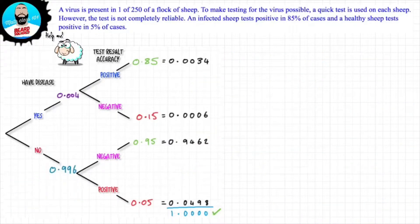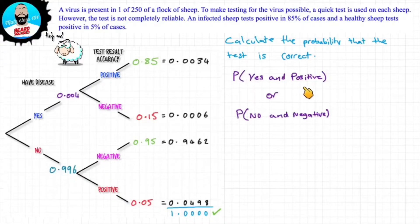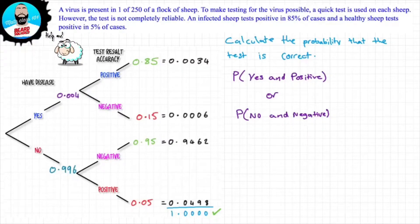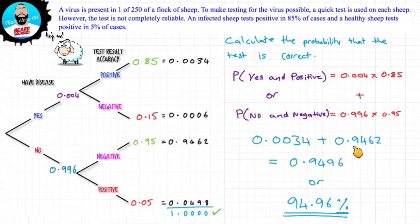Let's look at some questions. Calculate the probability that the test is correct — so the probability you have the disease and test positive, or the probability you don't have the disease and test negative. Both of these outcomes are correct, so 0.0034 plus 0.9462 gives us 94.96% probability that the test is correct.